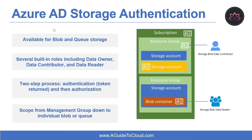Now let's understand Azure AD storage authentication. In addition to shared key and shared access signature, Azure blob and queue storage support using Azure Active Directory to authorize storage requests. With Azure AD, you can use role-based access control (RBAC) to grant permissions to a security principal, which may be a user, group, or application service principal. The security principal is authenticated by Azure AD to return an OAuth 2.0 token.